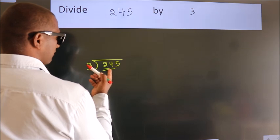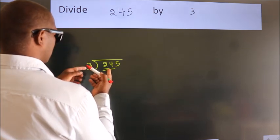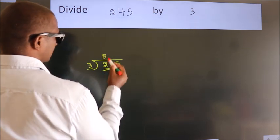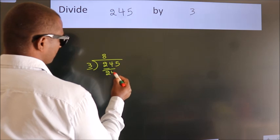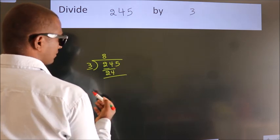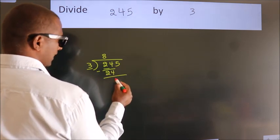When do we get 24? In the 3 table. 3 times 8 is 24. Now we should subtract. We get 0.